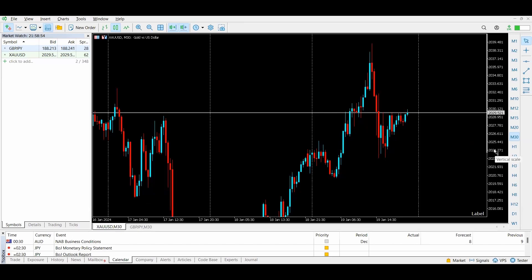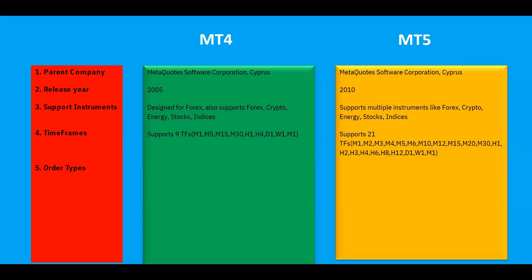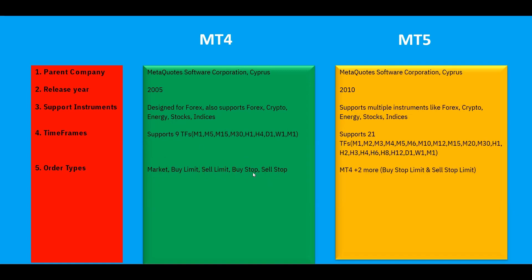The next comparison point is order types. On MT4 we have market orders and four pending order types: Buy Limit, Sell Limit, Buy Stop, and Sell Stop. On MT5 we have all the order types supported by MT4, plus two additional pending order types: Buy Stop Limit and Sell Stop Limit. Let's go to the terminals to see these order types.